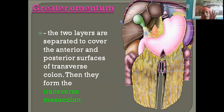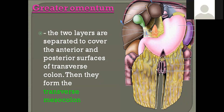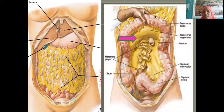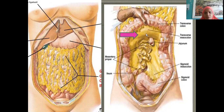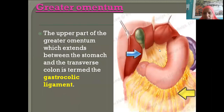Behind the greater omentum, it is continuing and getting attached to the transverse colon, to continue as the transverse mesocolon. The inferior aspect of the liver connects to the lesser curvature of the stomach — this fold of peritoneum is the lesser omentum. From the greater curvature is the greater omentum.